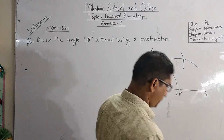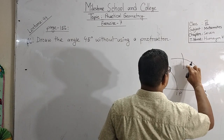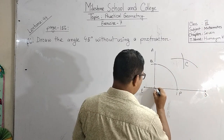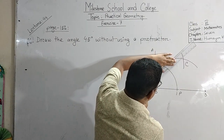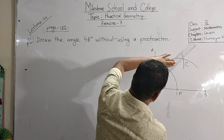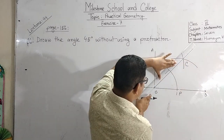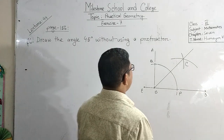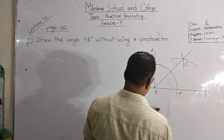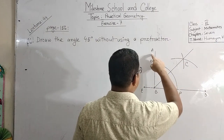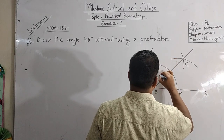Suppose these two arcs intersect at point C. If we join B and C, we will get a line segment BC and we will get two angles, ABC and CBD. Both angles' measurement is 45 degrees.